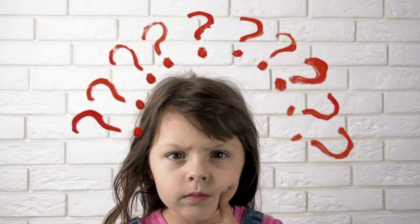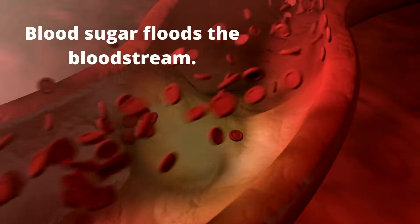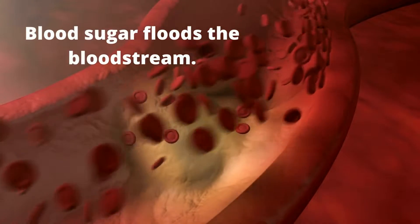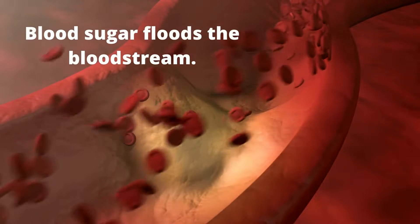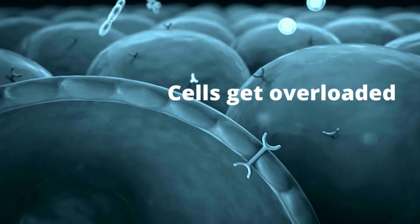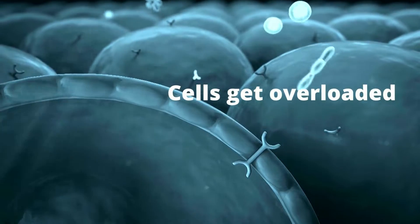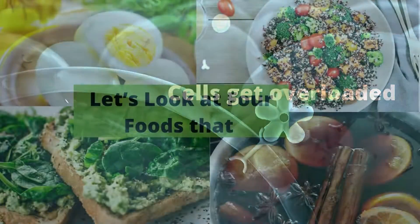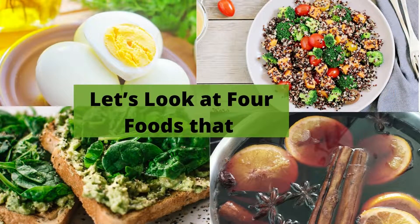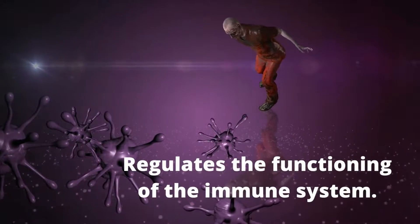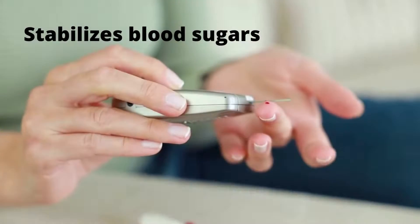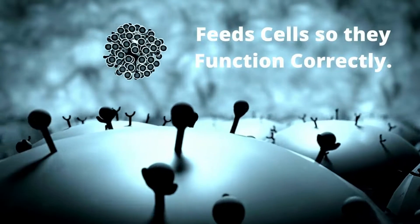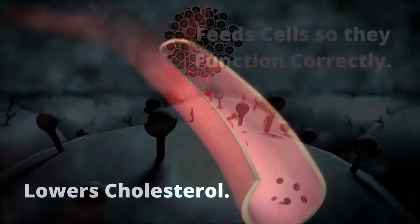Why? Blood sugar floods the bloodstream and the pancreas pumps out more insulin to push blood sugar into cells. Over time the cells can no longer take this pressure so they don't respond to insulin at all. Let's look at four foods that regulate the functioning of the immune system, stabilize blood sugars, feed cells so they function correctly and lower cholesterol.